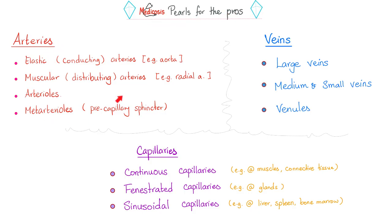Some pearls for the pros. Arteries are divided into elastic arteries, muscular arteries, arterioles, and meta-arterioles. Elastic is like the aorta. Muscular, or distributing, is like the radial artery, ulnar artery, femoral artery, etc. Meta-arterioles have that precapillary sphincter. The word meta means change, because I'm changing the direction of blood. I'm shunting it away. I'm bypassing the capillary bed. Veins are divided into large veins, like the superior and inferior vena cavae, medium and small veins, like femoral vein, and venules. Capillaries are divided into continuous capillaries, fenestrated capillaries, and sinusoidal capillaries. These are huge. Liver, spleen, bone marrow.